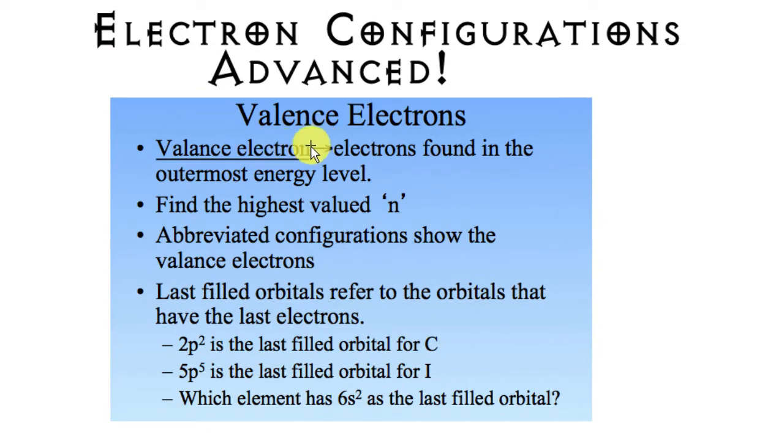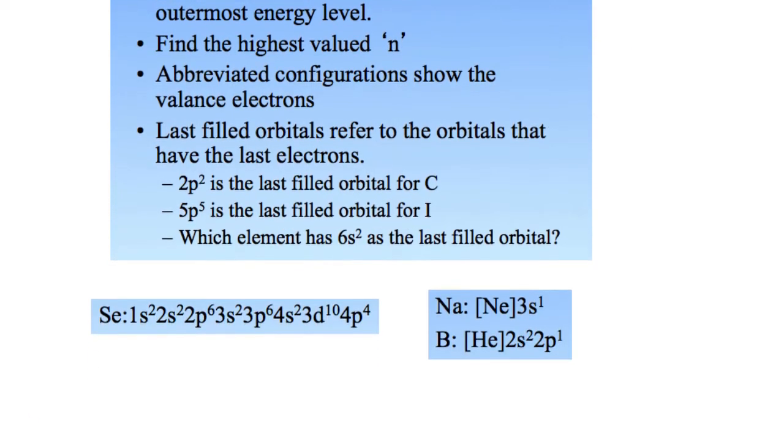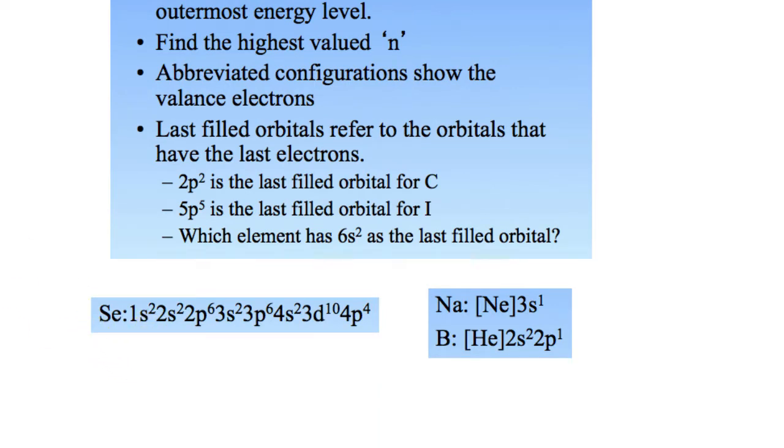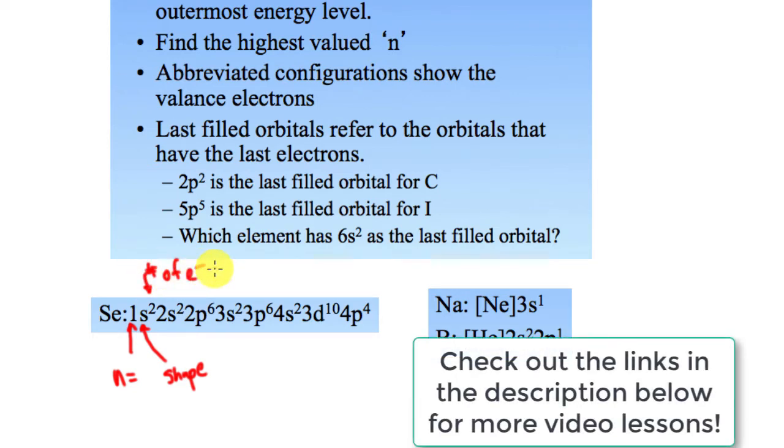One thing that's important in chemistry is the valence electron. Those valence electrons are the ones found in the outermost energy level. So that means you're going to find the highest n value. Remember n, if you're looking at electron configurations, the number in the front here is n. And then the s tells us the shape of the orbital. So these are describing the orbitals that the electrons are sitting in. And then the number here is the number of electrons.